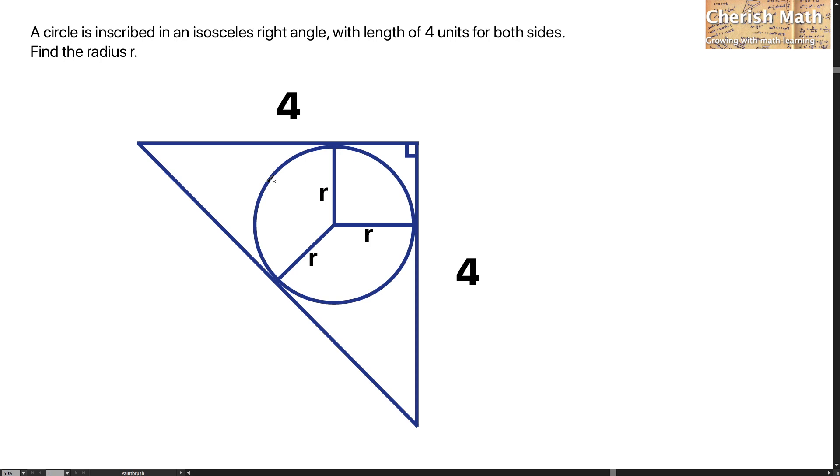A circle is inscribed in an isosceles right triangle with length of 4 units for both sides. Find the radius R.